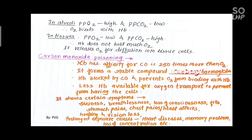Carbon monoxide has about 200 to 250 times greater affinity for hemoglobin than oxygen. It forms a stable compound known as carboxyhemoglobin. This is a carbon monoxide–hemoglobin union. It blocks hemoglobin and prevents oxygen from binding.